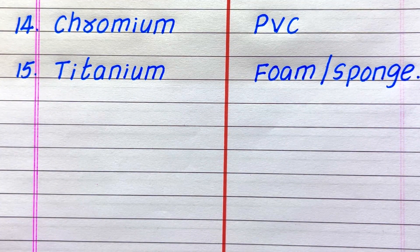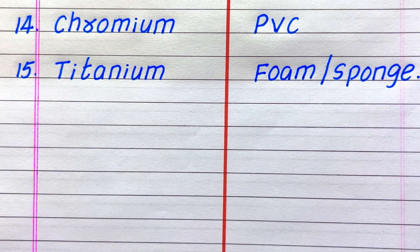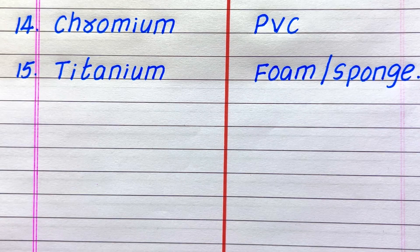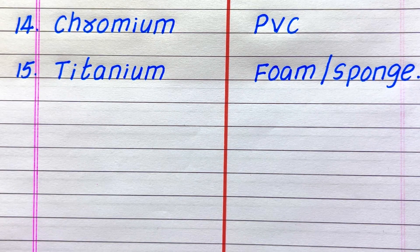14th example of a conductor is chromium, last one, 15th is titanium. 14th example of an insulator is PVC, last one, 15th is sponge. Thanks for watching, please do like the video and don't forget to subscribe to my channel.